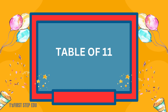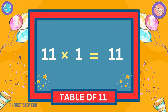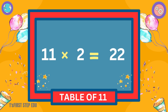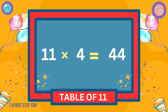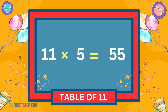Table of 11. 11 ones are 11. 11 twos are 22. 11 threes are 33. 11 fours are 44. 11 fives are 55.